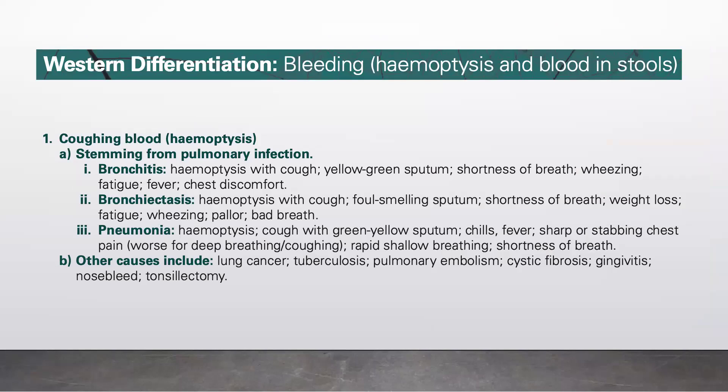Hemoptysis, the coughing of blood, can be caused by pulmonary infection, which is further differentiated into bronchitis, bronchiectasis, and pneumonia. In bronchitis, there is hemoptysis with purulent yellow-green sputum, shortness of breath, wheezing, fatigue, fever, and chest discomfort. In bronchiectasis, there is hemoptysis with purulent foul-smelling sputum, shortness of breath, weight loss, fatigue, wheezing, and bad breath.